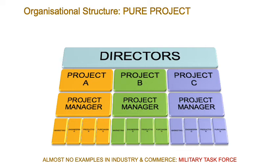In a Project OS, the directors are still at the top, but work is arranged by project. Say you have three projects — A, B and C — each with its own project manager, and each project manager has their own marketing, engineering, production and purchasing staff. It's very different from the functional OS. It's not very efficient either — you can imagine this is how the military would operate. Why have separate engineering and marketing staff for each project when the same staff could work across all three?